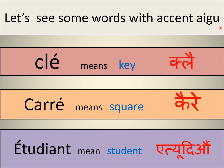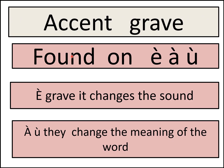Now let's see some words with the accent aigu, read the French way. Here é will be pronounced 'e.' So: é-c-l-a-i-r-e is 'éclaire,' meaning a square. And é-t-u-d-i-a-n-t is 'étudiant,' meaning a student. Notice I say 'étudiant,' not 'étudianT' — because the letter 't' is mostly silent in French when it is at the end of a word.